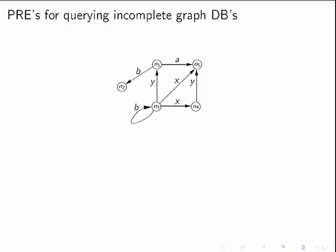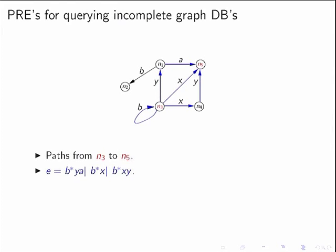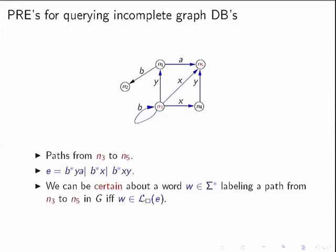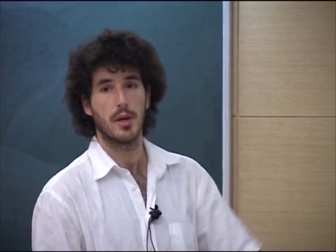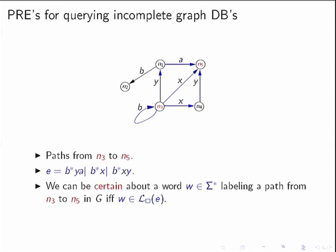Here is how parameterized regular expressions are used. Consider a graph and all paths from N3 to N5. The regular expression defining the labels of all paths corresponds to an expression like B* · Y · A · B* · X · B* · X · Y. If we want to be certain that a word always labels a path regardless of the interpretation of the variables, then that word belongs to the certainty (box) semantics of this expression. So, computing certain answers for path queries in incomplete graph databases requires working with parameterized regular expressions and the certainty semantics.